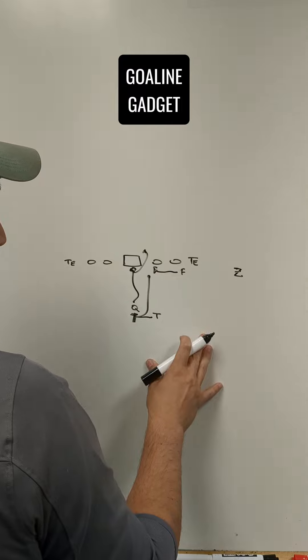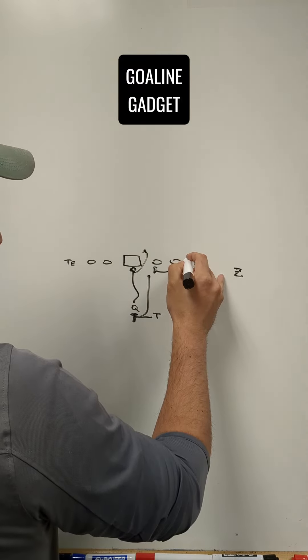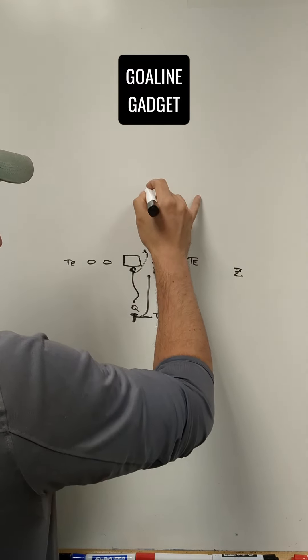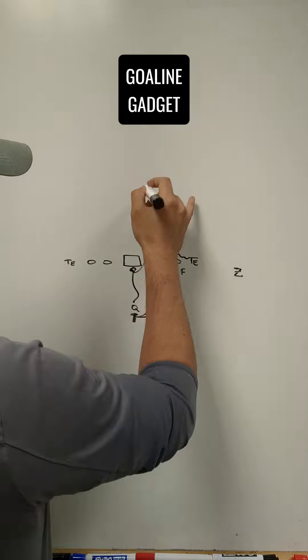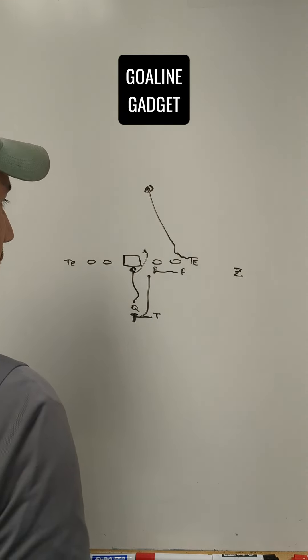Then the tailback went and made it look like he was running dive. What we really did was we actually down blocked the tight end and then released him down the middle. And we ran a jump pass to the tight end. That ended up going for a touchdown.